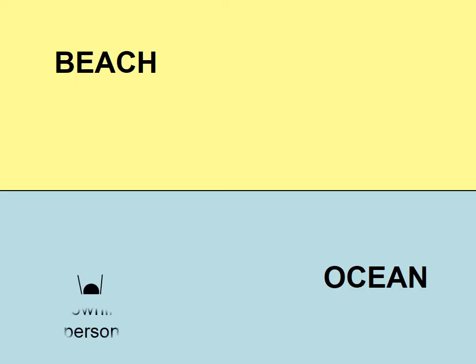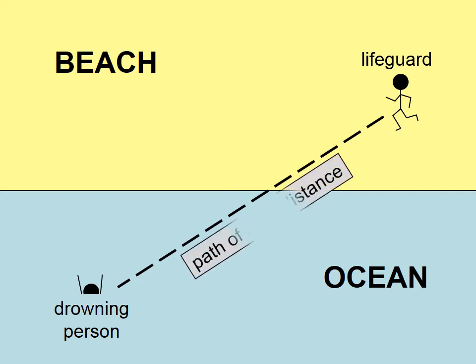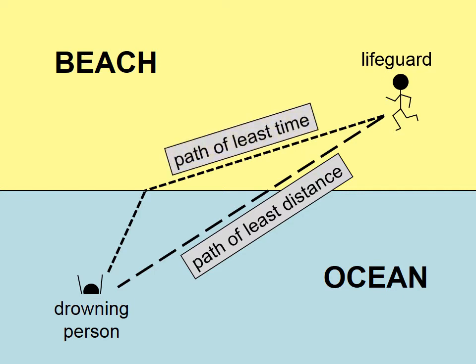Let's try to explain refraction by using an example with a drowning person and a lifeguard at the beach. The path of least distance between the lifeguard and the drowning person is of course a straight line. But the lifeguard is interested in getting to the person in the least amount of time, not necessarily traveling the least distance. So this lifeguard is going to take a path indicated here.